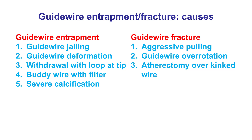If the guidewire becomes entrapped, one should be very gentle and use maneuvers to free it, because pulling hard may actually lead to either fracture or deformation and make things worse. Another potential cause for fracture is over-rotation of the guidewire and performing atherectomy over a kinked wire — whether a Viper wire for orbital atherectomy or the Rotawire for rotational. If it becomes kinked, it should be replaced with a new guidewire.